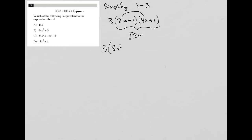And then the O represents multiplying the two outer things. So that's 2x times 1. Those are the two outside values. So 2x times 1 is a positive 2x. I stands for multiplying the two inner terms. So that's 1 times 4x. That's a positive 4x.